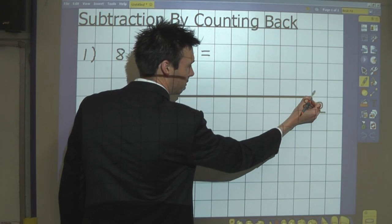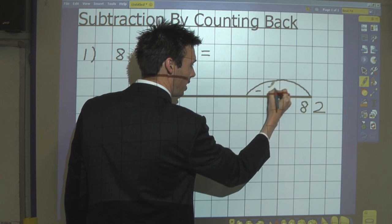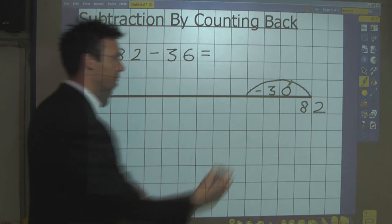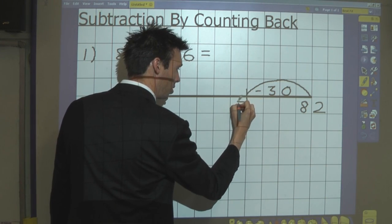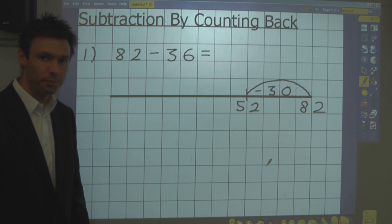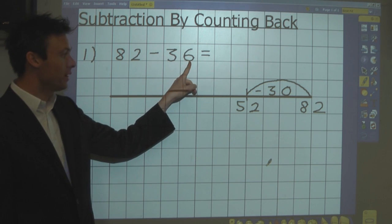The first thing I do is take away 30, which gives me 52. Here, my number bond knowledge is useful, because I'm now going to take away 6.